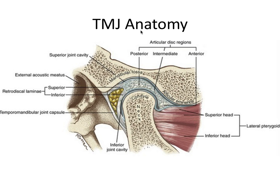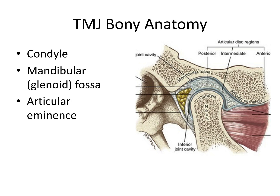Let's briefly go over some basic TMJ anatomy. The temporomandibular joint is the articulation between the condyle and the glenoid or mandibular fossa. The condyle is the condylar head of the mandible. The mandibular fossa, or glenoid fossa, is a concavity in the temporal bone, and the articular eminence is a convexity also in the temporal bone. Between this articulation sits the articular disc, essential for proper TMJ function.